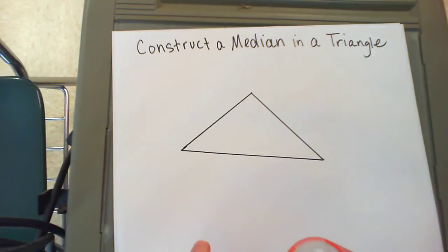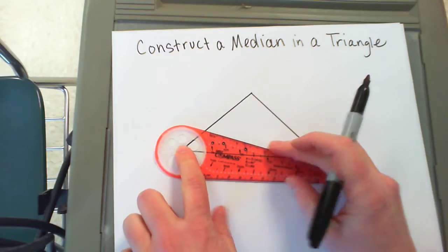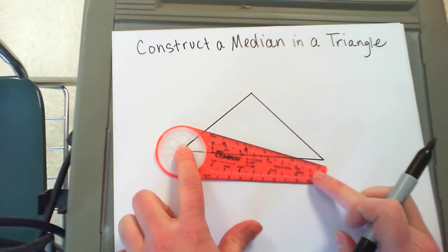To find the midpoint, first thing you're going to do is make a perpendicular bisector. So you place the gold ring on one vertex in your triangle, you pick an arch that's visibly more than halfway.